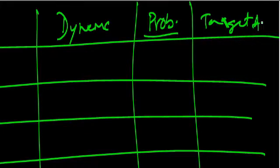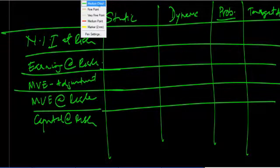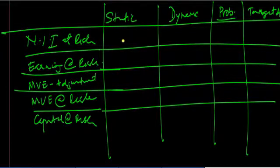So if I were to work with something, NII at risk is a static report, it's not dynamic. Earnings at risk is a dynamic report. MVE adjustment, just like NII at risk, is a static report.